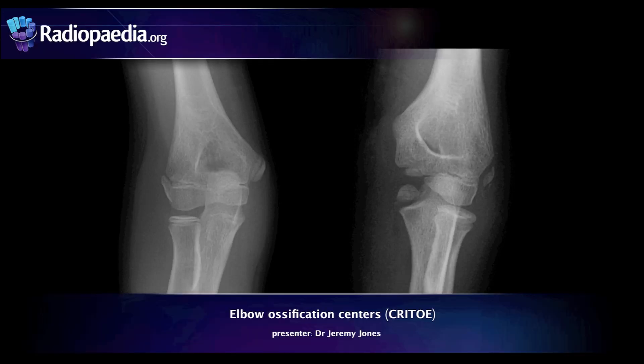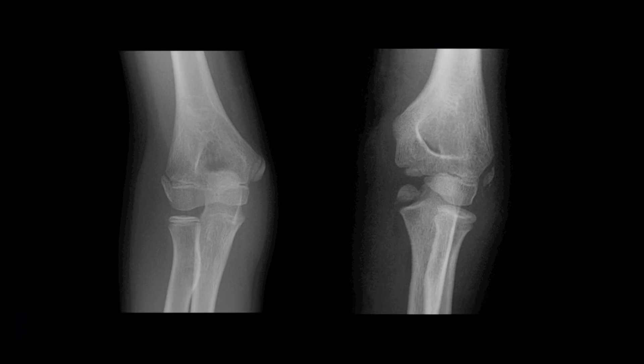Hi there, my name is Dr. Jeremy Jones from radiopedia.org and today we're going to be looking at the ossification centres in the elbow. Elbow radiographs are often seen as complicated and difficult to report, and this is partly because of the number of ossification centres that develop around the elbow in childhood. Elbow trauma in paediatric patients is common and being confident about whether the elbow ossification centres are normal or not is key to accurate diagnosis.